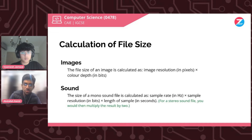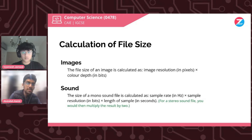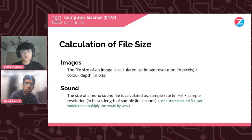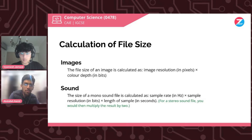For sound, a mono sound file is calculated as: sample rate in Hertz, multiplied by the sample resolution, multiplied by the length of the sample in seconds. For a stereo file, you multiply the result by two because two channels are recorded at once, whereas in a mono sound file only one channel is recorded. The logic is that sample rate is measured per second, so the formula gives you the total amount of storage.